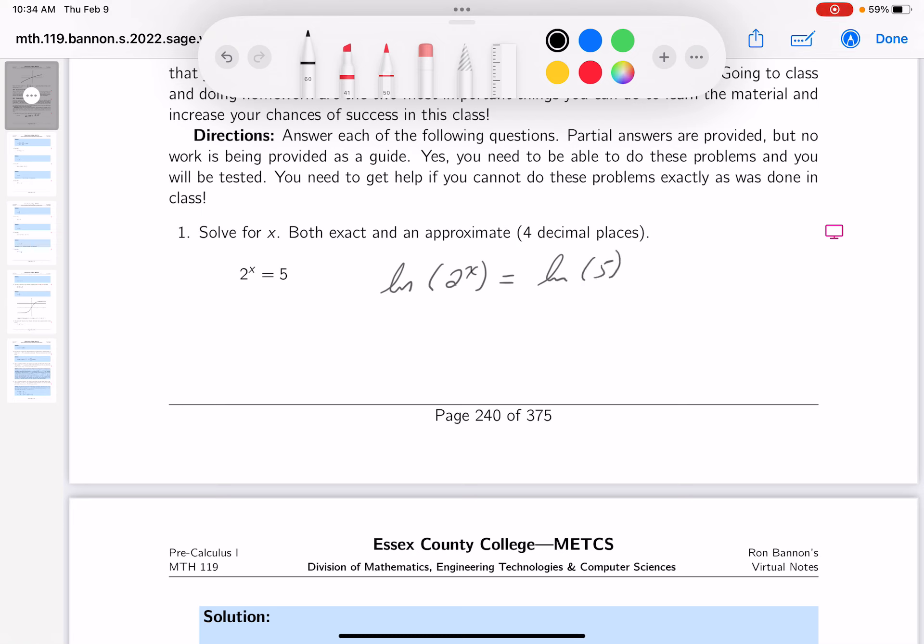What I'm going to do now is use the rules of logs. The x comes down, so you get x ln 2 equals ln 5.